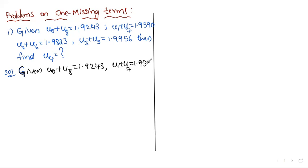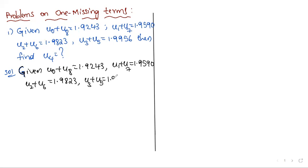u0 plus u8 is equal to 1.9243, u1 plus u7 is equal to 1.9590, u2 plus u6 is equal to 1.9823, u3 plus u5 is equal to 1.9956. Now find u4.